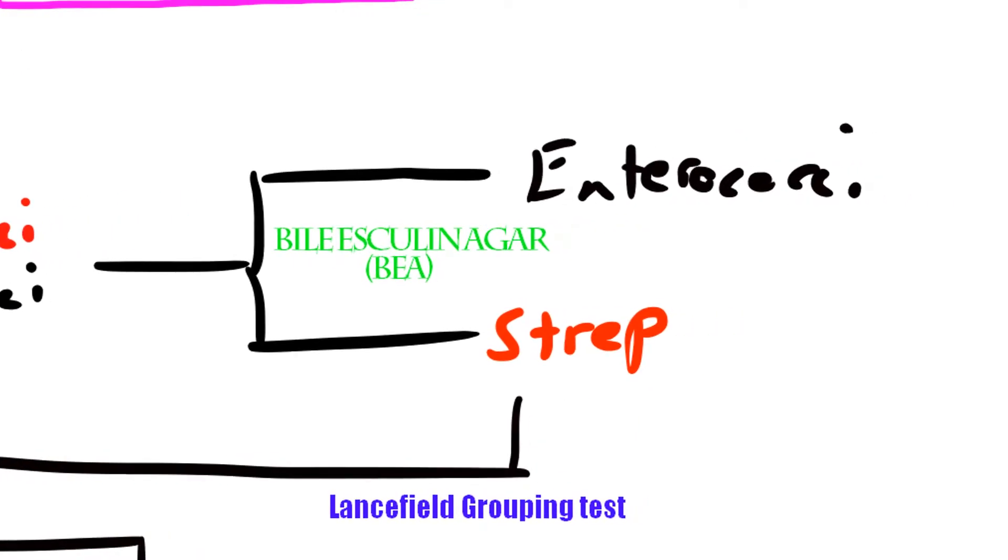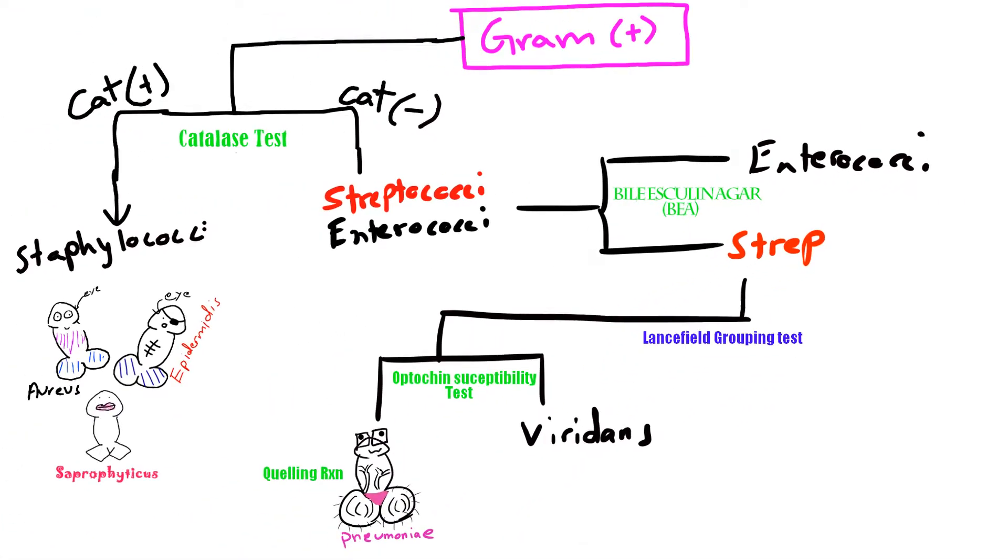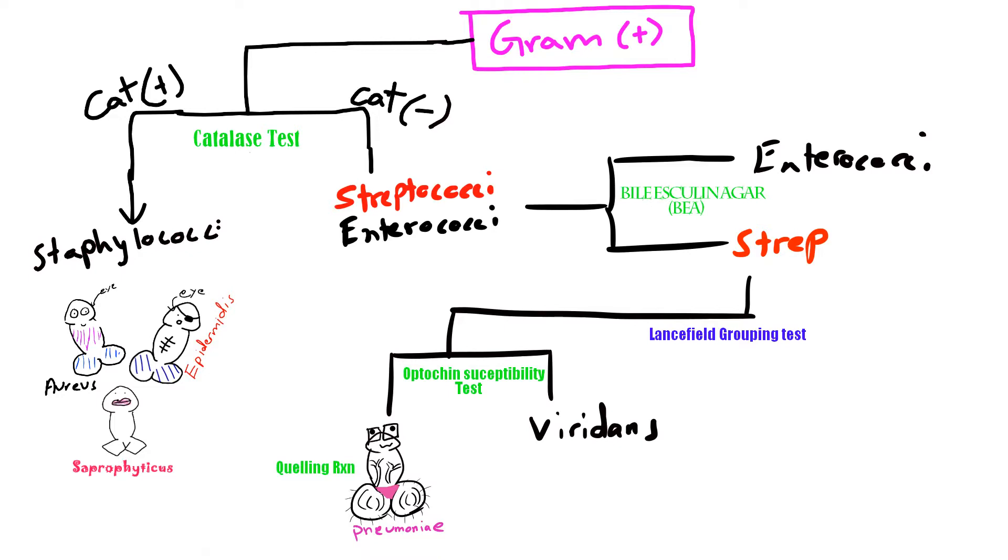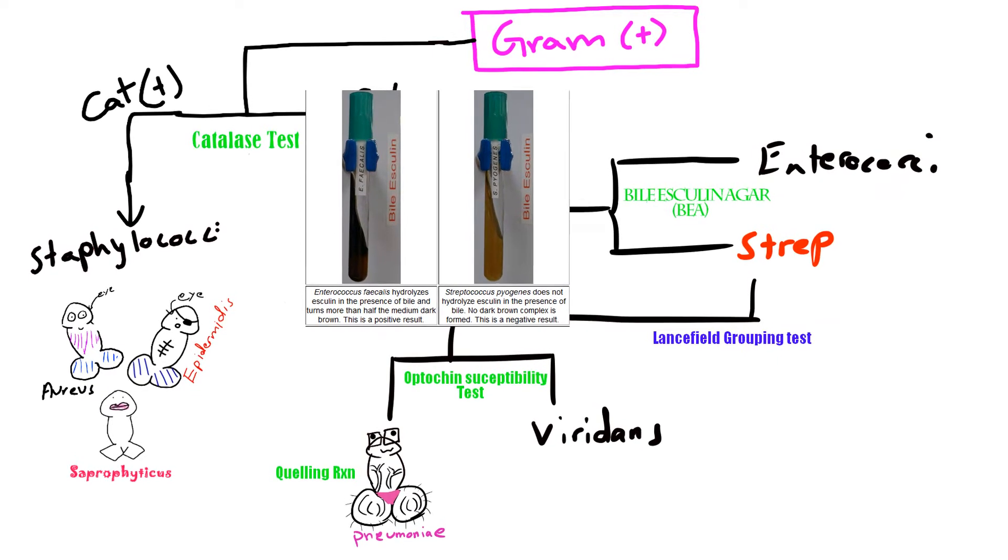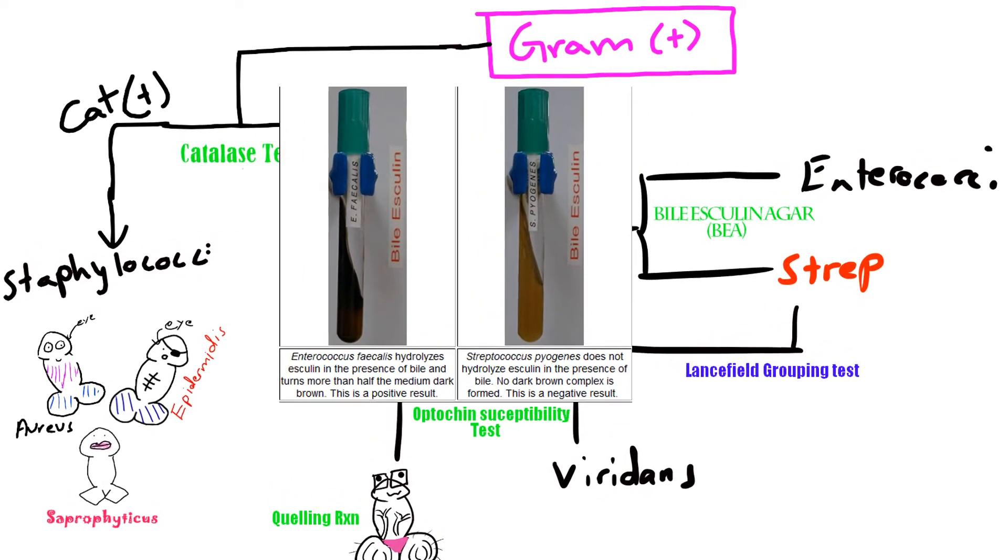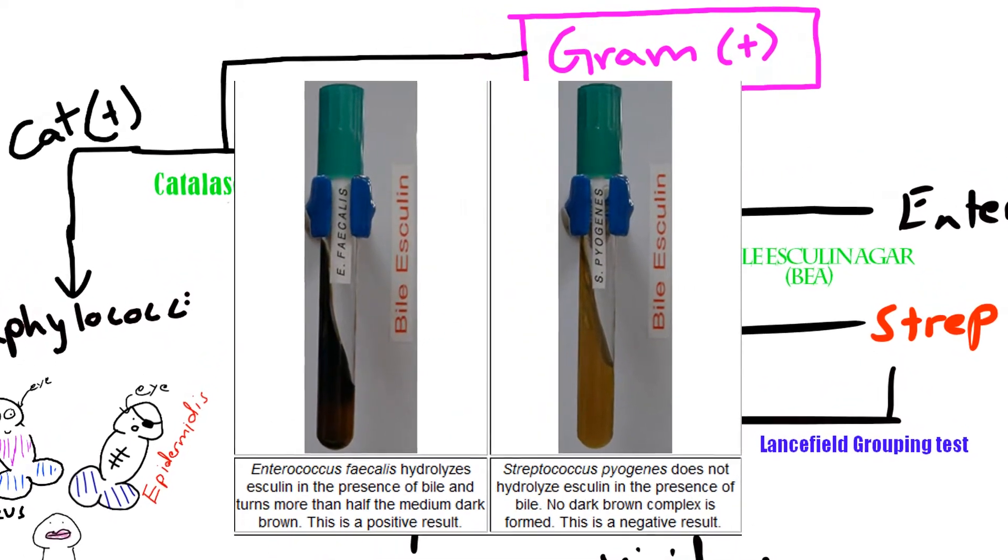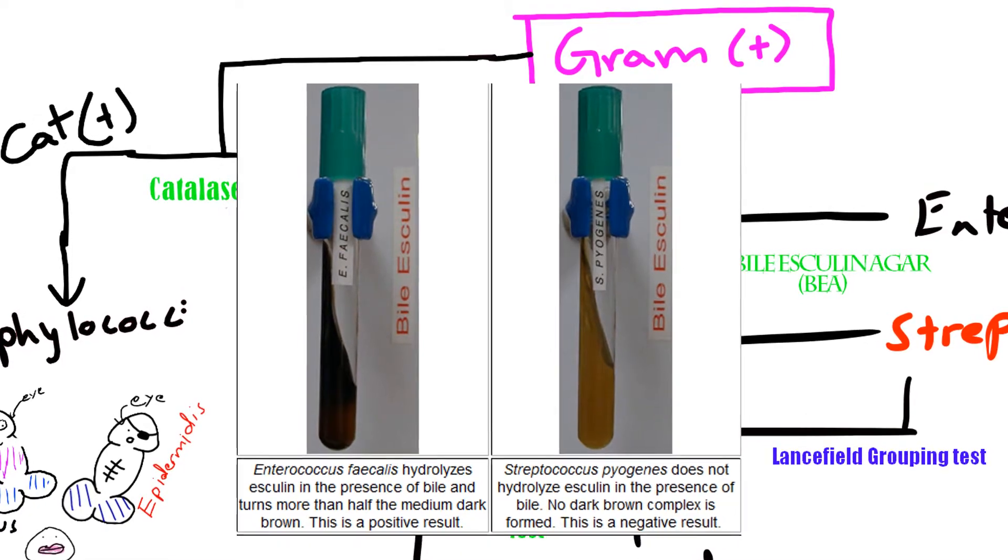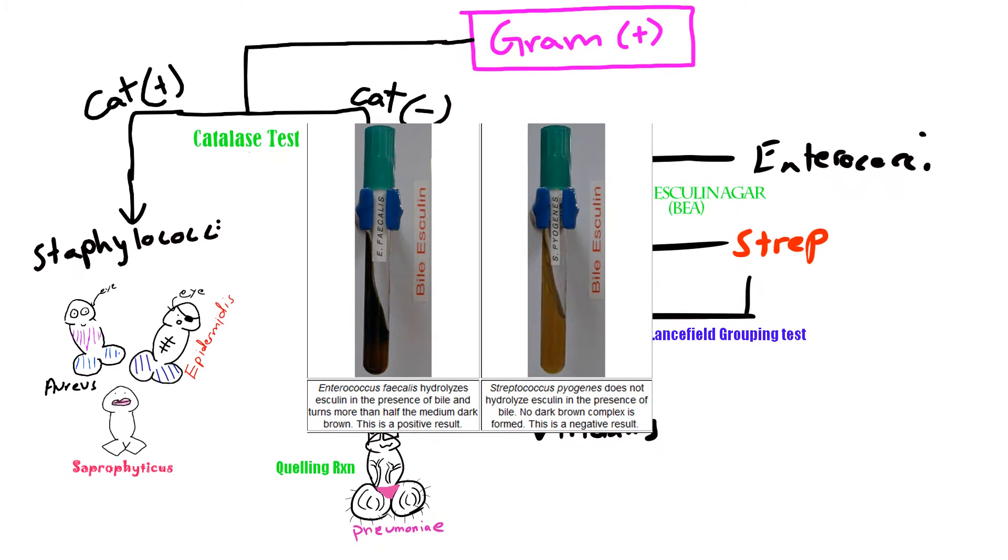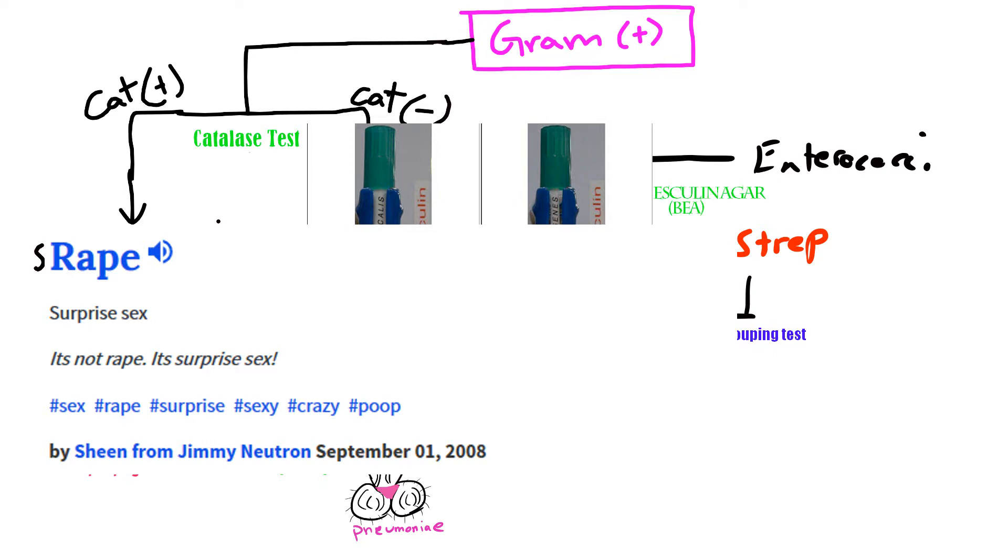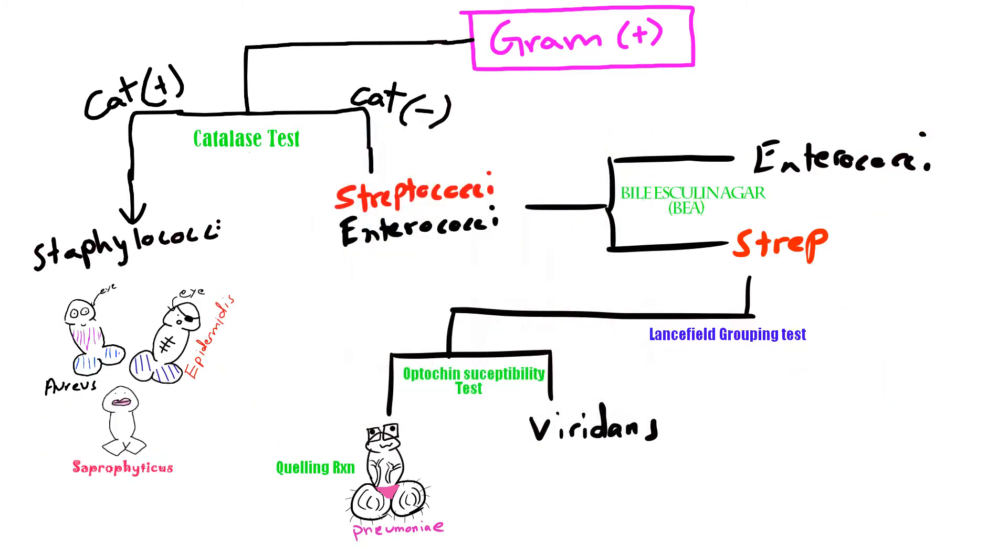We can then use bile esculine agar, also known as BEA, which differentiates streptococci from enterococci. Bile esculine agar contains 4% bile, which inhibits the growth of most gram positives, along with glycoside esculine and ferric citrate. If the bacteria can break down glycoside esculine into esculitin and dextrose, then we can detect it, because the esculitin will react with the ferric citrate to produce a charcoal type black color. So in this case, streptococcus pneumoniae pretty much gets raped by the bile. So yeah, it's BEA negative, so that makes our life pretty easy.